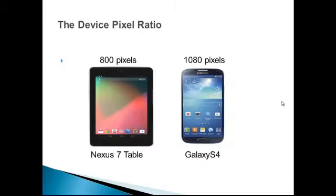Here we shall discuss the device pixel ratio based on two different devices. As you can see, there are two devices: one is the Nexus 7 tablet and the other is the Galaxy S4. The Nexus 7 tablet contains only 800 pixels in width, while the Galaxy S4 phone is actually 1080 pixels in width. Both are the same physical dimensions. Even though the S4 has more pixels, it still appears as a phone. The answer exists in a little bit of magic called device pixel ratio, and the fact that the web platform is presenting a different value to you.